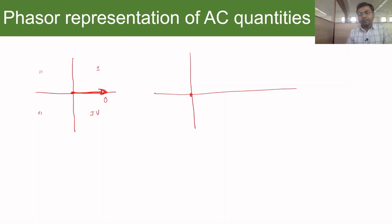At zero degrees, the phasor lies on the horizontal surface, so it looks like a point. As it rotates — for example, by 45 degrees — we track the angle. Through one complete revolution it passes through 90 degrees, 180 degrees, and 360 degrees (2π radians).